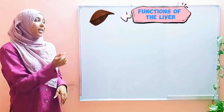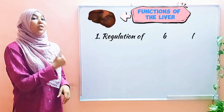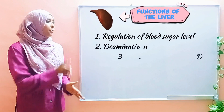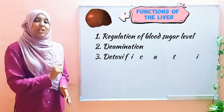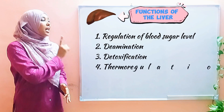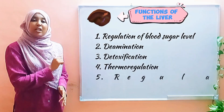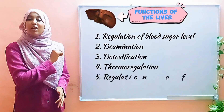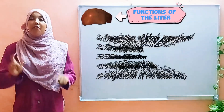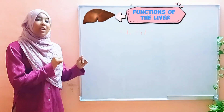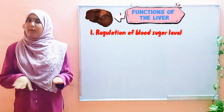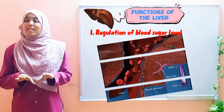These five main functions are: number one, regulation of blood sugar level; deamination; detoxification; thermoregulation; and lastly, regulation of red blood cells. So stay tuned. The first one — regulation of blood sugar levels — let's break it down.